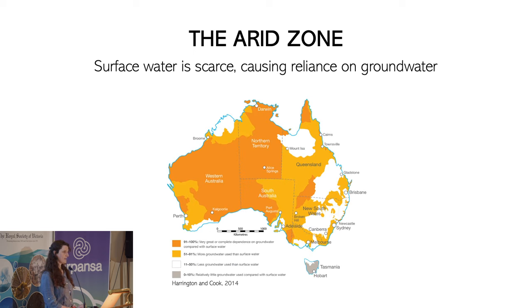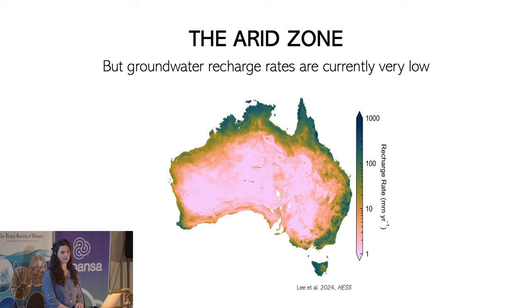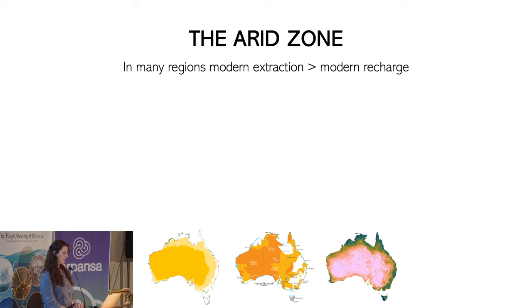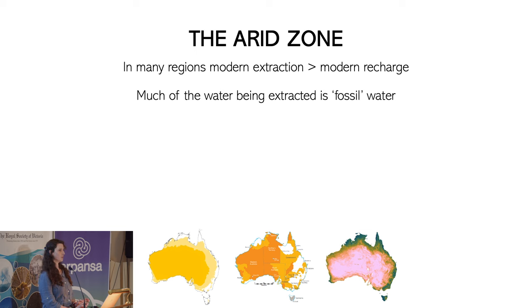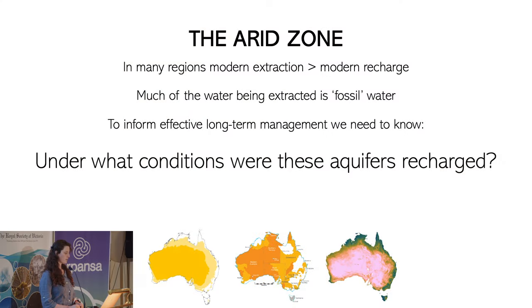Here is a map of groundwater dependence in Australia. The light orange areas show where we use more groundwater than surface water, and the dark orange is where we have complete or near complete dependence on groundwater resources. The problem is that in a lot of Australia, groundwater recharge rates are currently really low. We have more groundwater extraction than recharge, so a lot of the water we're using is fossil water that entered the groundwater systems a long time ago but isn't being replenished as quickly as it's being used.